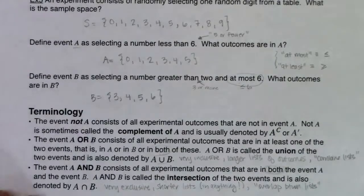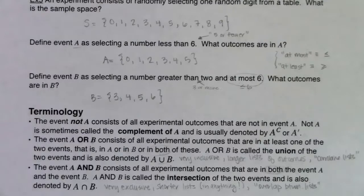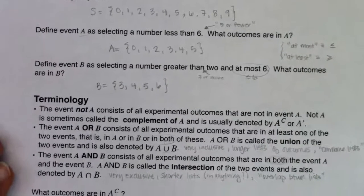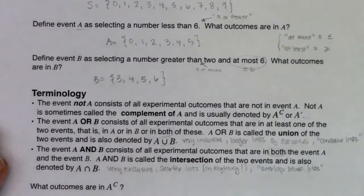Once you have your basic events A and B, you can find the complement, the AND, and the OR — and then combine those ideas. For example, you could find a complement and then OR it with a regular event. Let's work through these. First: what outcomes are in A complement?